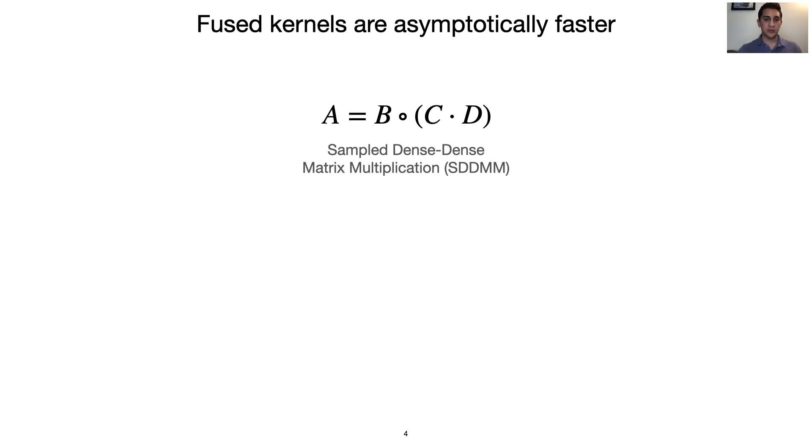For dense tensor algebra, there remains an opportunity to decompose kernels into a set of primitives. This decomposition leads to asymptotically worse performance for sparse tensor algebra.